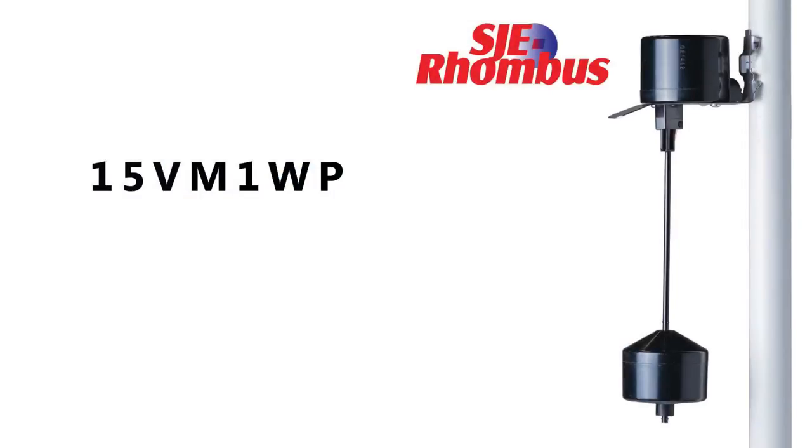So here's a quick key to help you better understand the model number of a vertical master float. In this example we have a 15VM1WP. The 15 represents the cable length in feet. VM denotes the model as a vertical master. One is for 120 volt. The WP comes into play with the with piggyback plug.